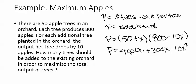We're going to take the derivative and set that equal to zero. So the derivative of 40,000 is zero. The derivative of 300x is 300 minus the derivative of 10x squared is 20x. And in order to find our critical point, we're going to set that equal to zero.